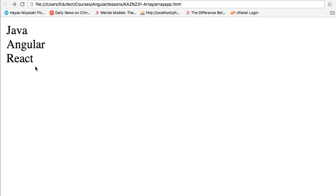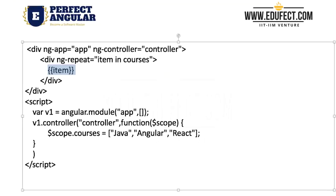In this example we declared an array, and using the ng-repeat directive we printed all the elements in the array.